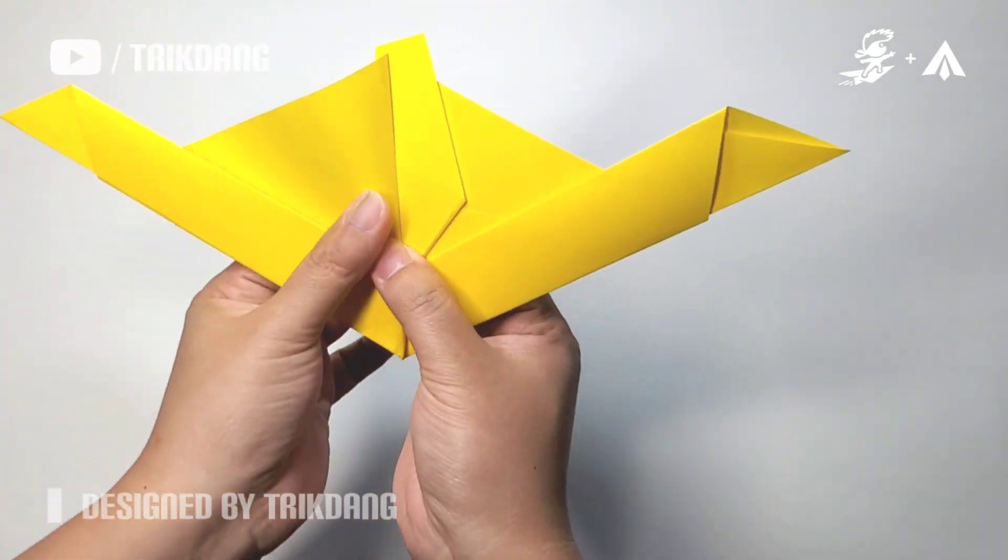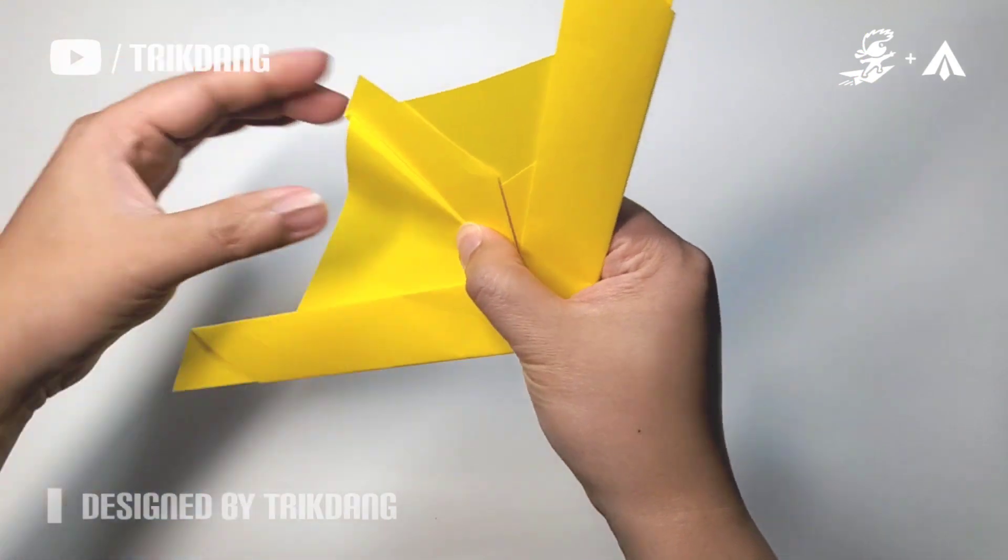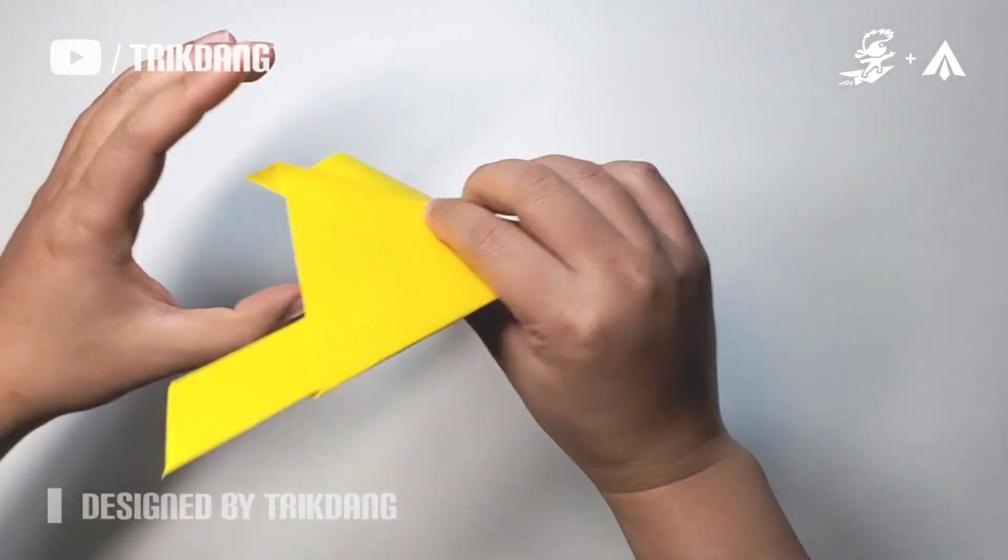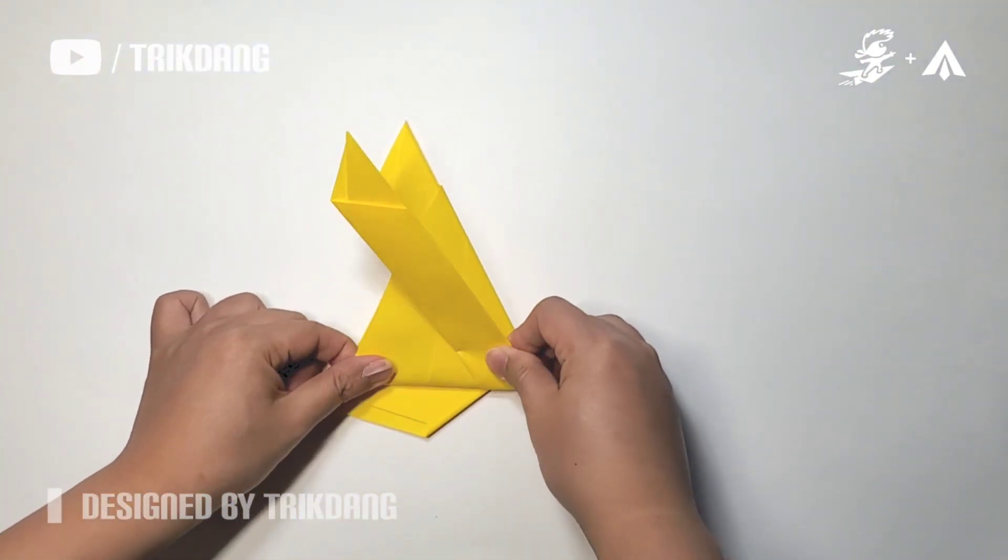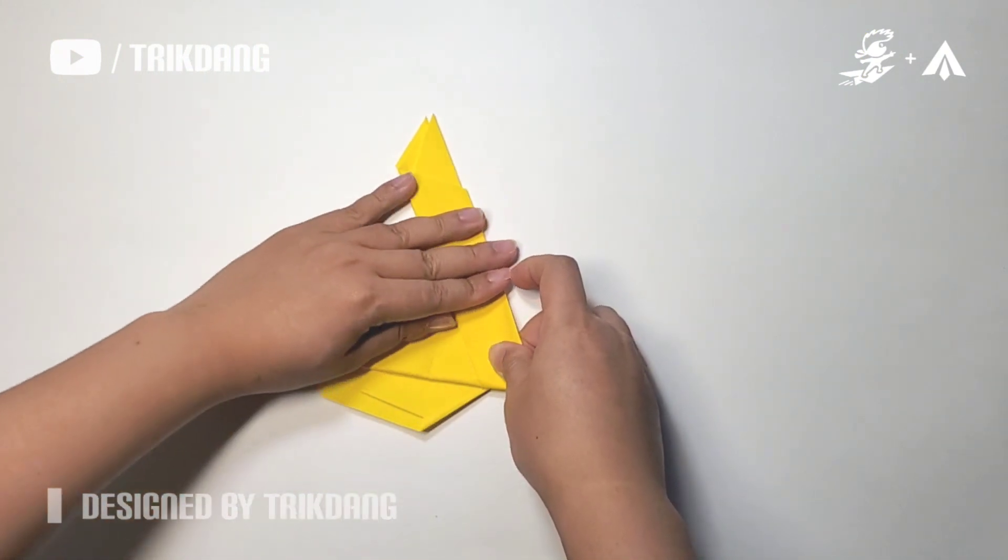And repeat the same fold for the opposite side. Now I'm going to press down the paper.